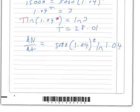That's how you differentiate exponentials where it's not simply e to the power of something. In this case, it's 1.04 to the power of something.